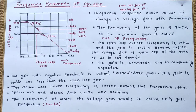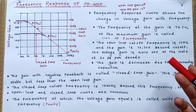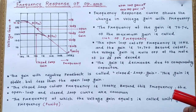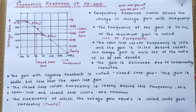Because the open loop gain is not stable, we provide negative feedback to the operational amplifier. The gain with negative feedback is called the closed loop gain. The drawback of the open loop gain is that it is not stable.